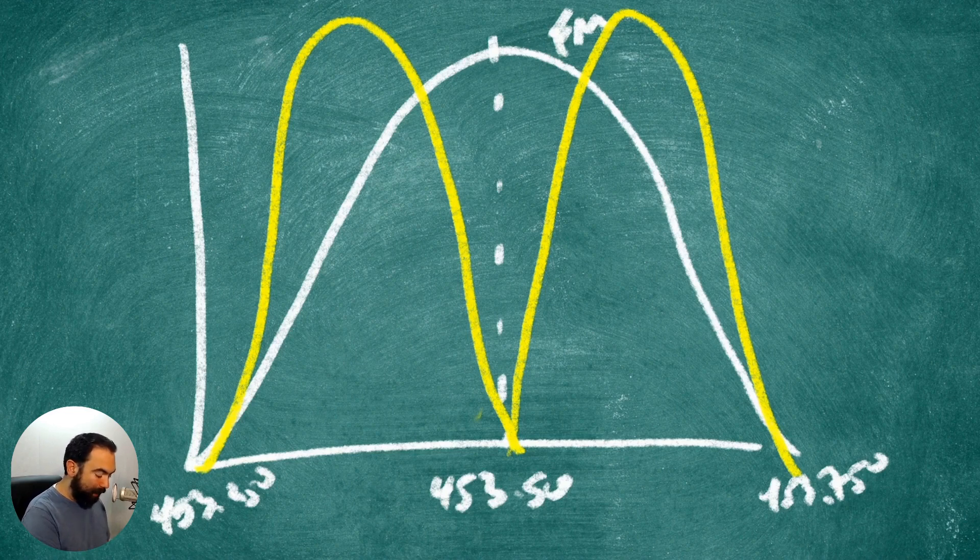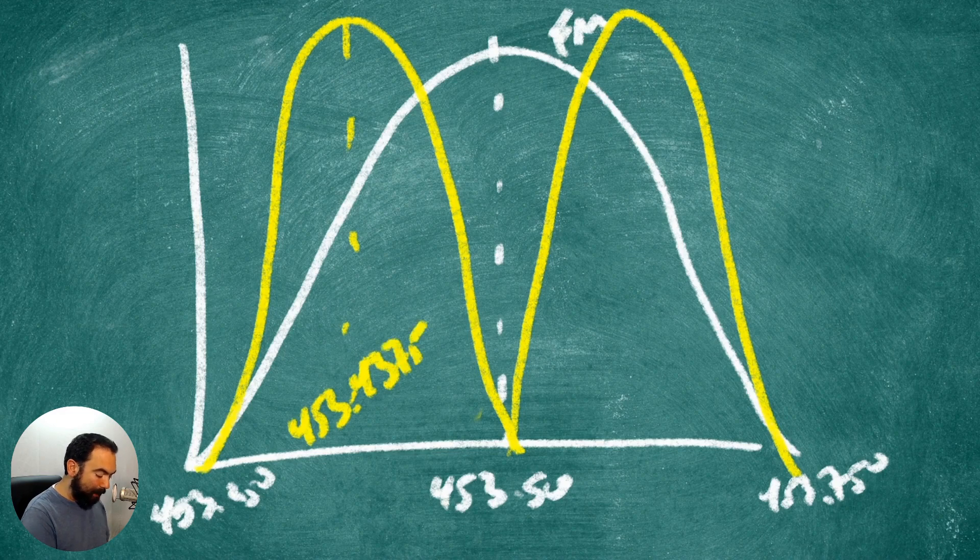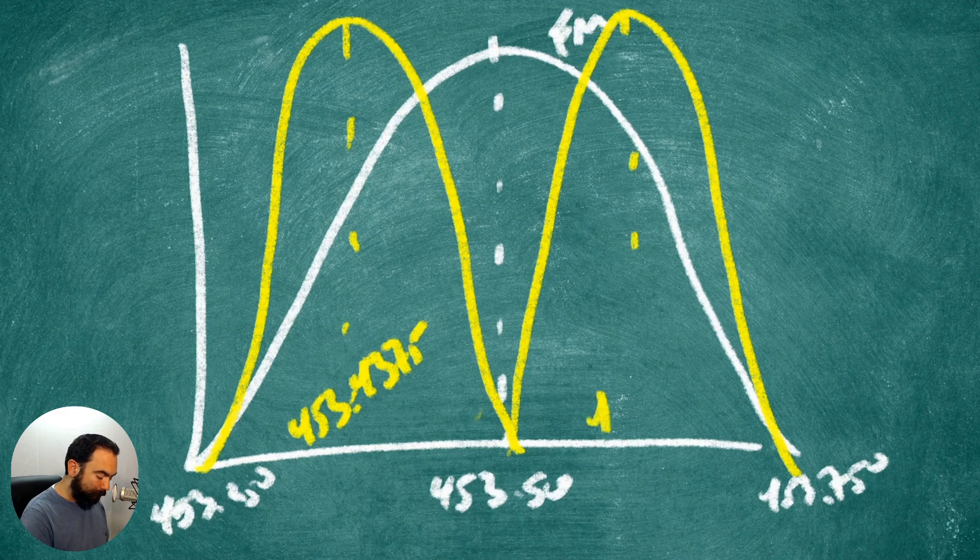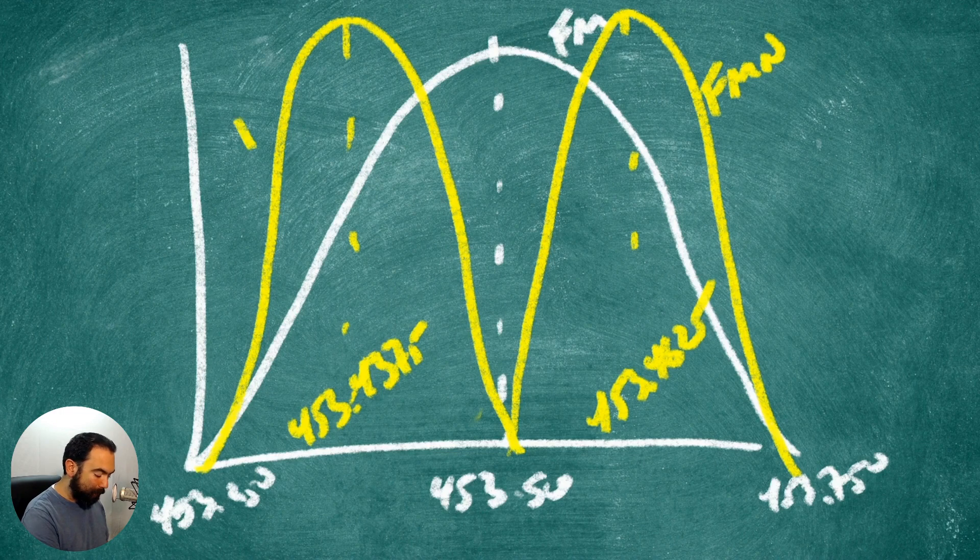So now again, the center of this comes down here and is 453.4375. And the center here is 453.4625. These are FM narrow frequencies.